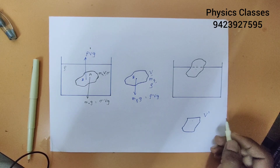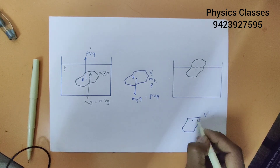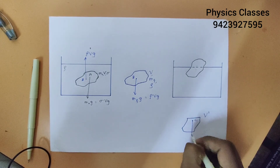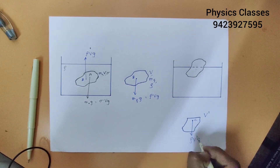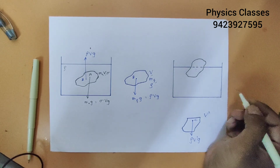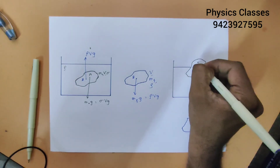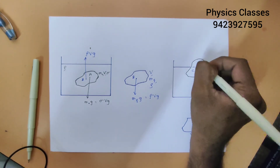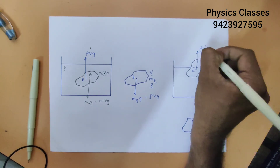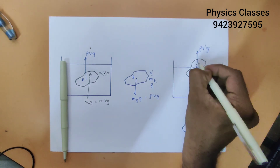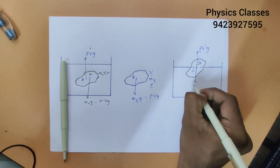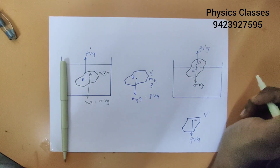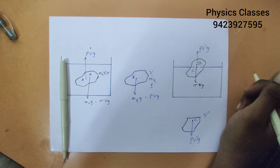Now the weight of this displaced fluid will act from its center of mass. Let C be the center of mass of this new displaced fluid. The weight in the downward direction will be rho times V' times G. This weight will act on this solid in the upward direction. So in the upward direction, the buoyant force acting on this solid will be rho times V' times G, and the gravitational force will again act from the center of mass in the downward direction, equal to sigma times V times G. Now this is in equilibrium — the buoyant force and the gravitational force are of the same magnitude, and hence the body is now floating in equilibrium.